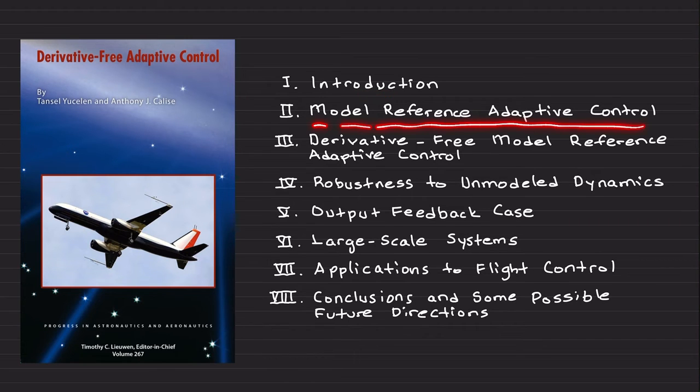Standard Model Reference Adaptive Control, its Derivative-Free Version, Robustness to Unmodeled Dynamics. You will find its Output Feedback Case, Applications to Large Scale Systems, and some Flight Control Applications, which we conclude the book by conclusions and some possible future directions. So this is basically most of them are published in the literature.